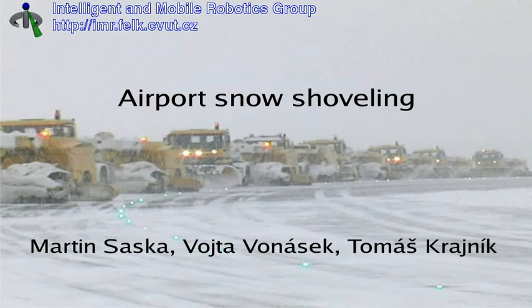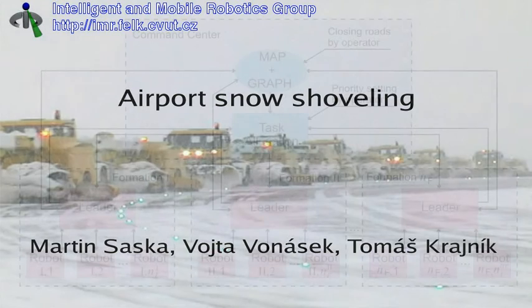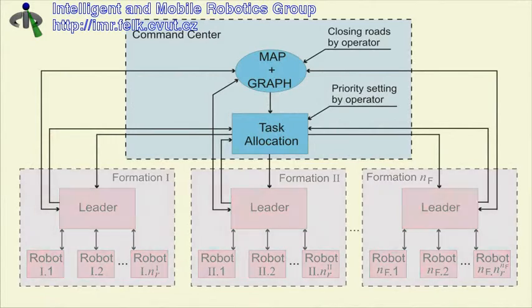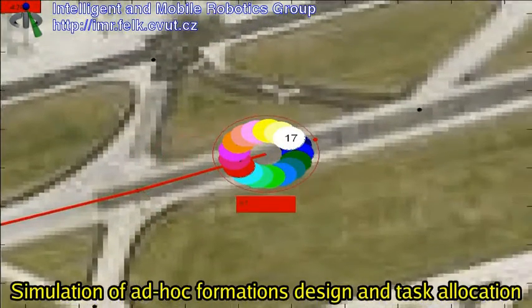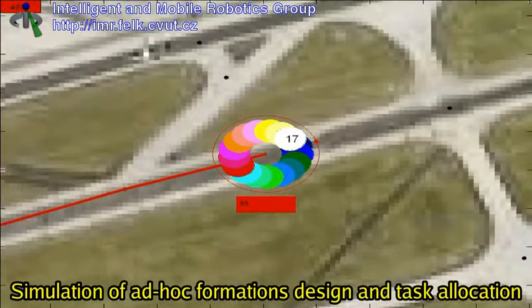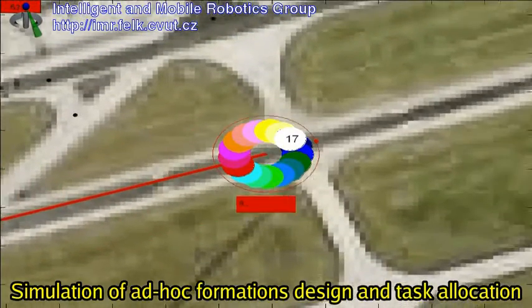Results of the robotic airport snow shoveling project are presented in this movie. Firstly, we show results of the task allocation algorithm, which is employed for optimal assignment of robotic teams.